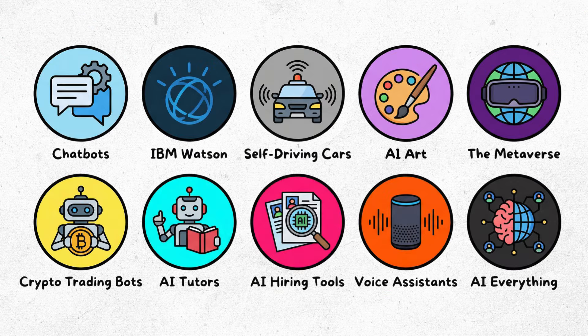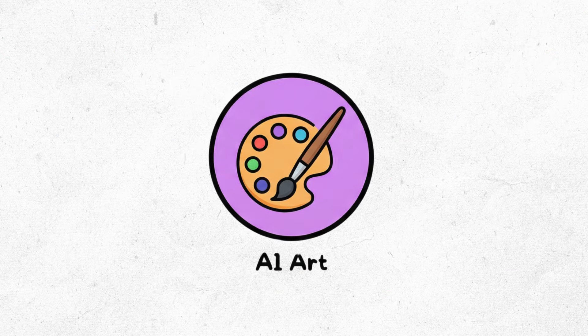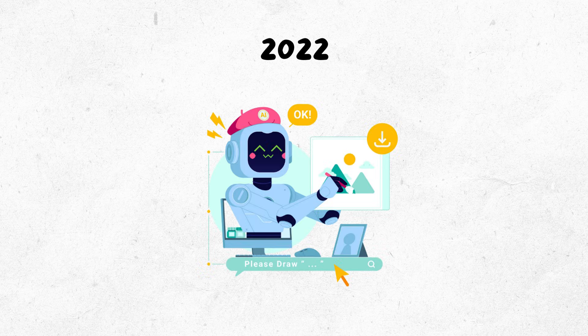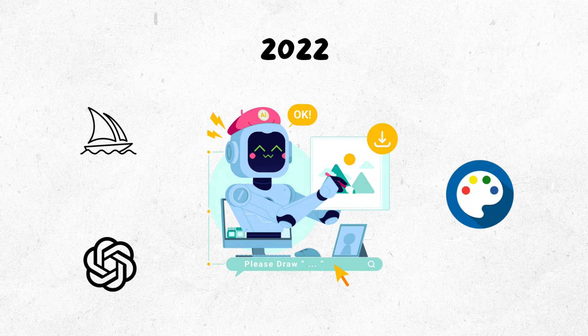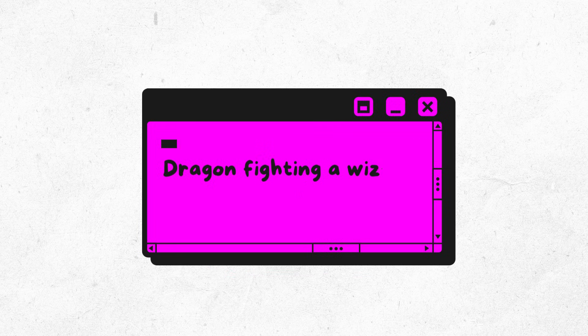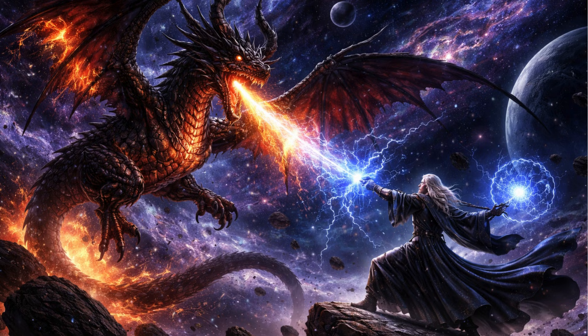AI art. Everyone's an artist now. Sort of. 2022. AI art tools dropped. Mid-journey. Dolly. Stable diffusion. Type what you want. Get a picture. Instantly. Dragon fighting a wizard in space. Boom. Instant art. No drawing skills needed.